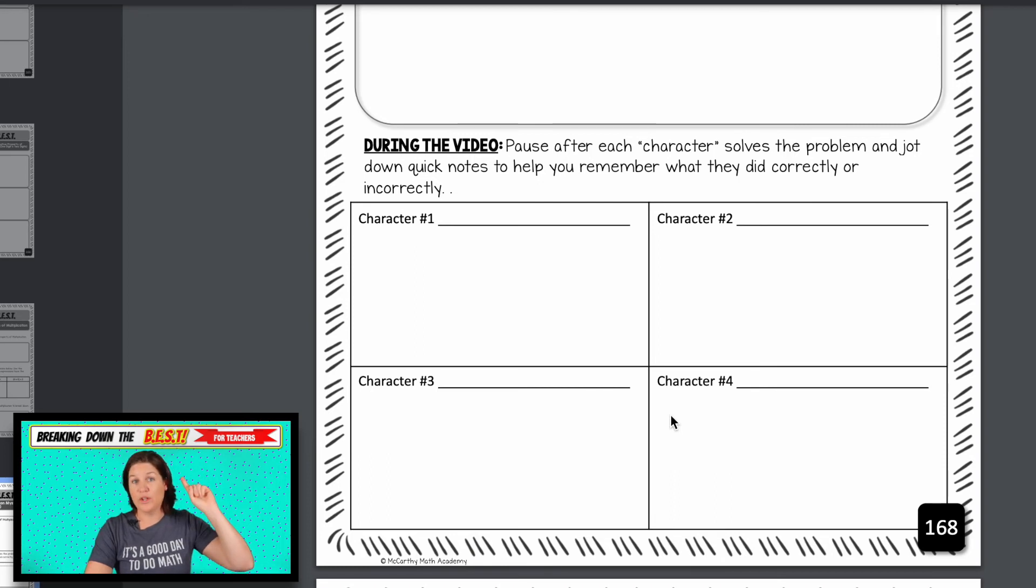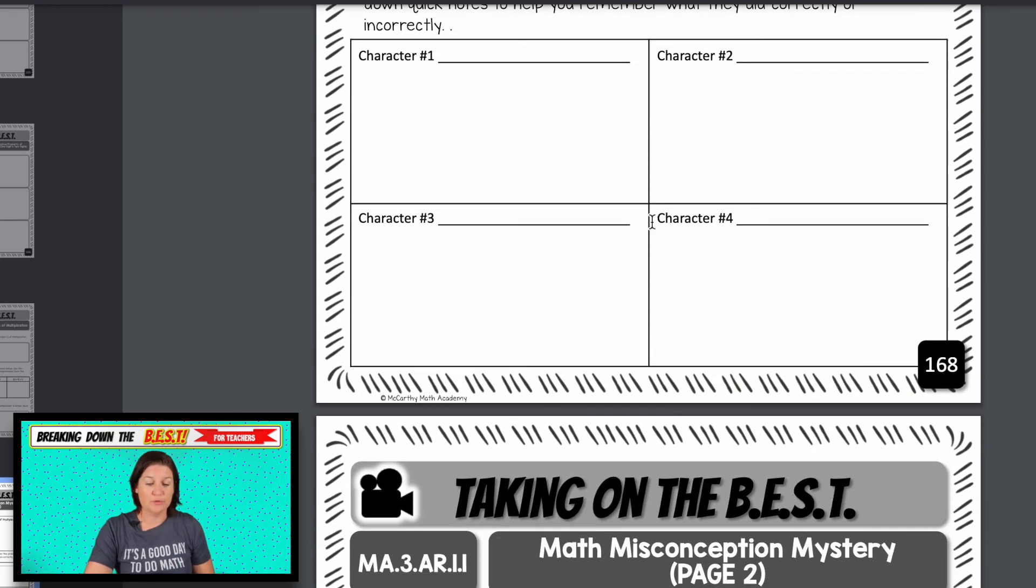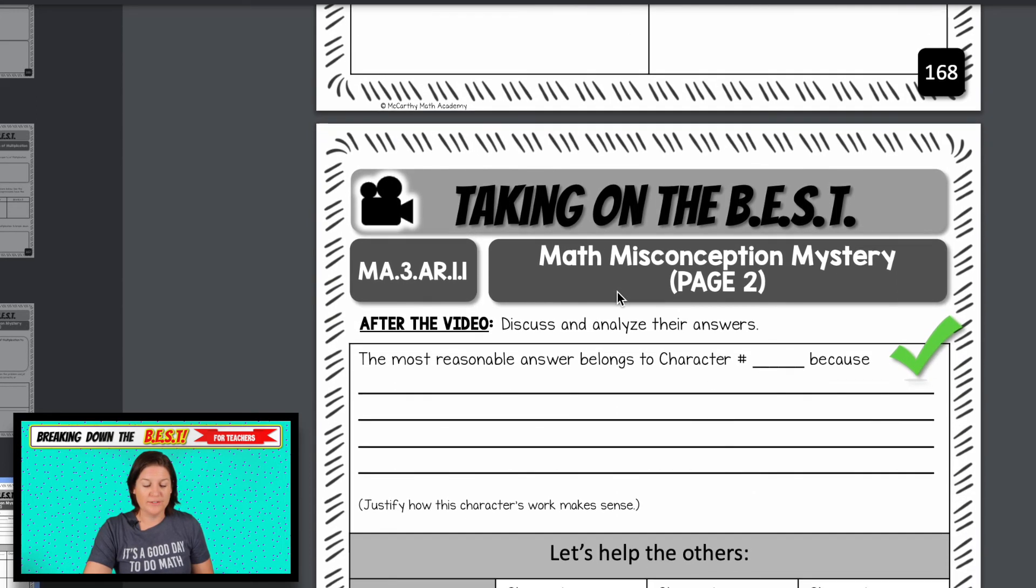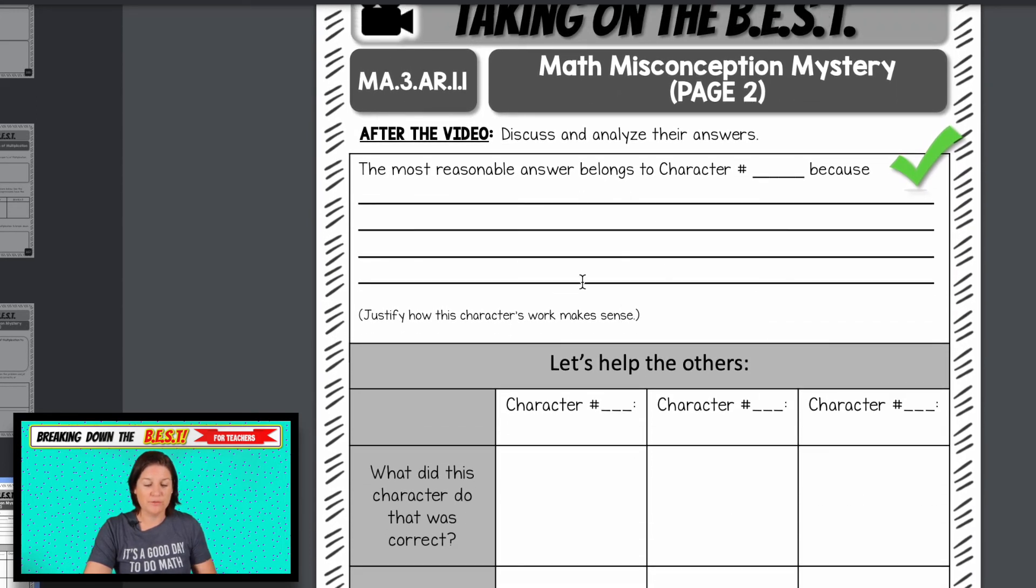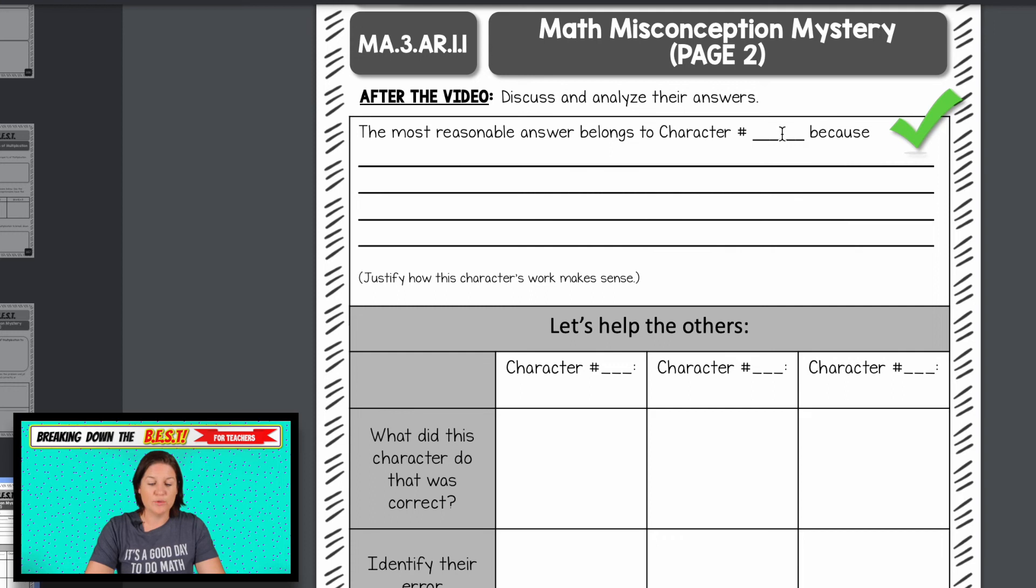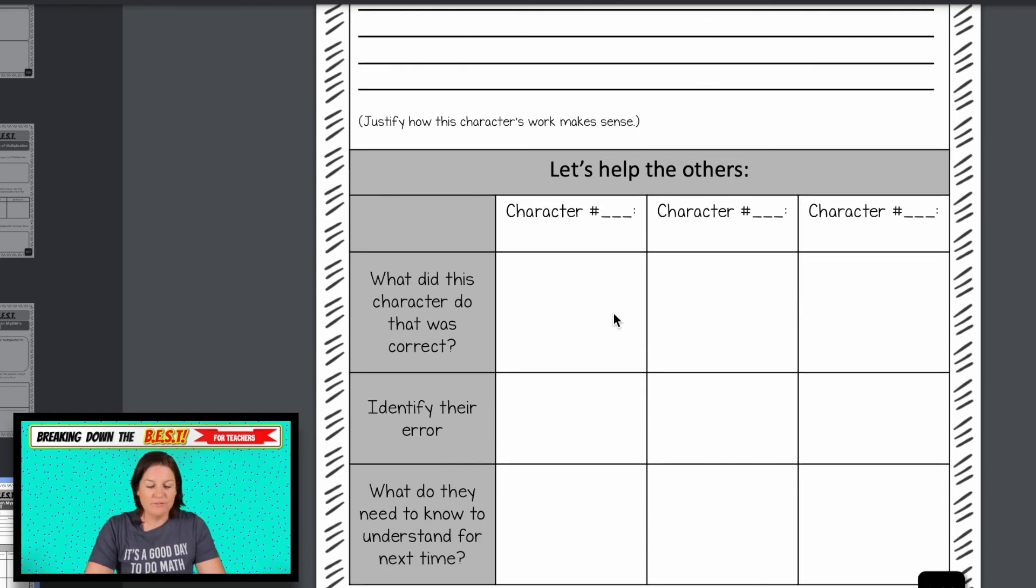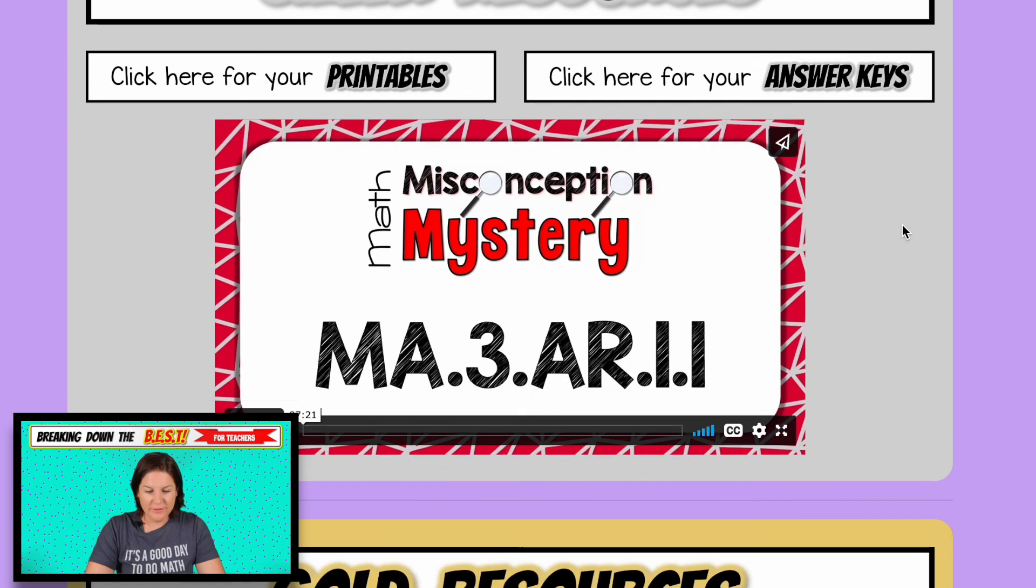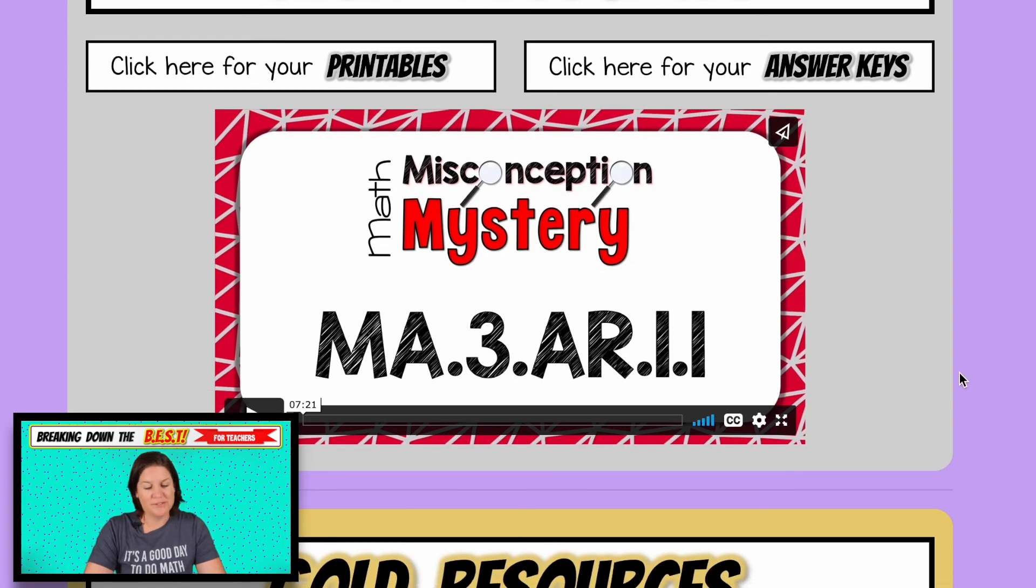Those four characters, three of them will make a mistake that students will commonly make and only one of them solves it correctly. So students will jump down their notes after each character presents their work and then they will fill out their detective report and showcase who the most reasonable answer belongs to and then evaluate the work of the other three characters, which is awesome. It's a big hit with teachers and an even bigger hit with the students. They love these math misconception mystery videos.